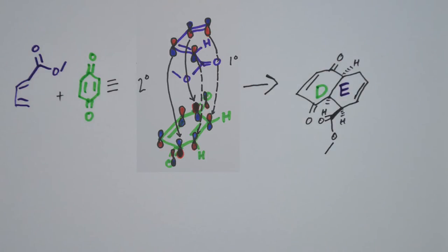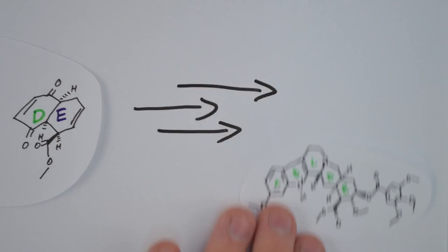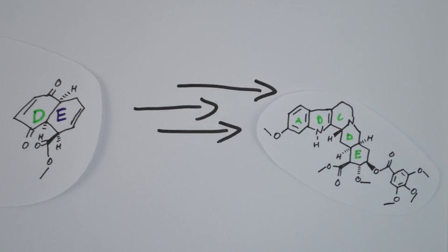Using the Diels-Alder reaction you've set up three of the five chiral centers in one fell swoop, leading you into one of the most examined syntheses of the 20th century.